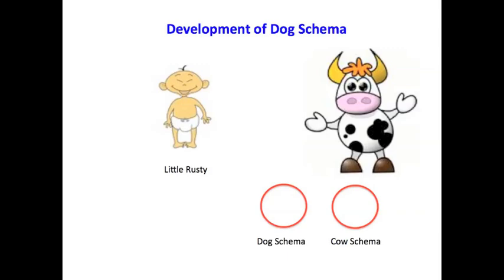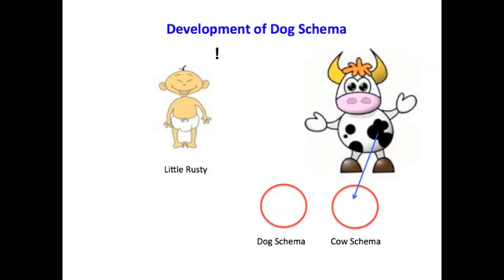The dogs are little fuzzy things and the cows are big fuzzy things, and Little Rusty is just tickled to death now because he has a cow schema and he can identify dogs and cows. Everything's hunky-dory and wonderful. Everything falls into its proper little schema or folder and the concepts are in place and everything's going fine until Little Rusty sees an elephant.